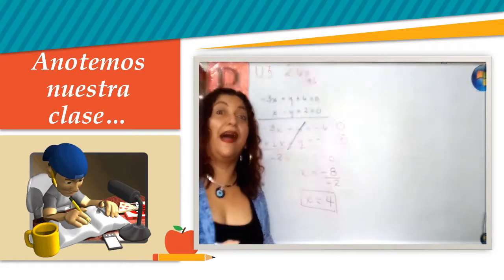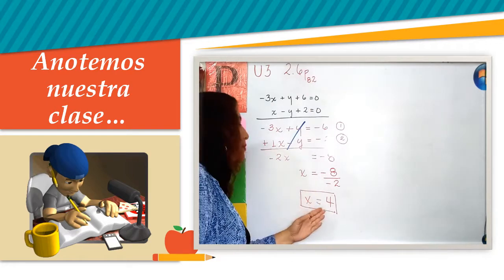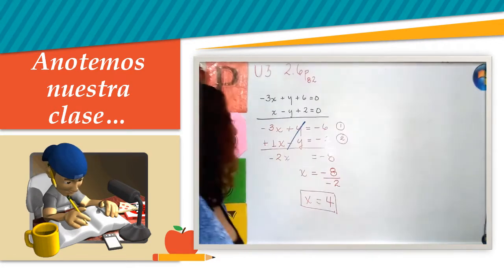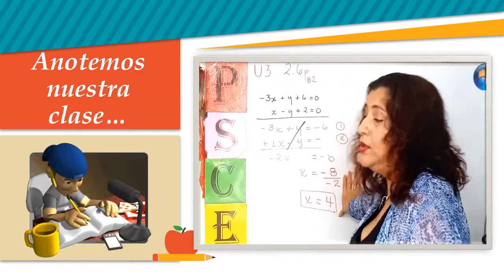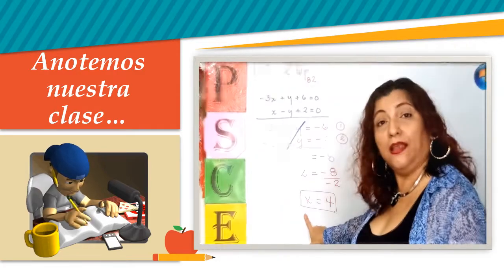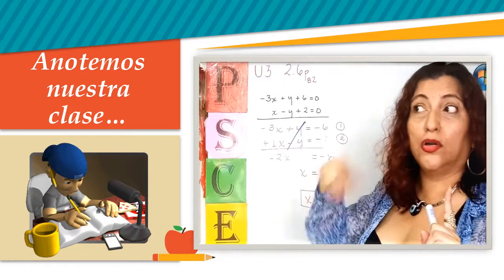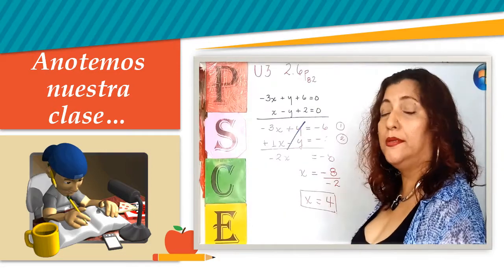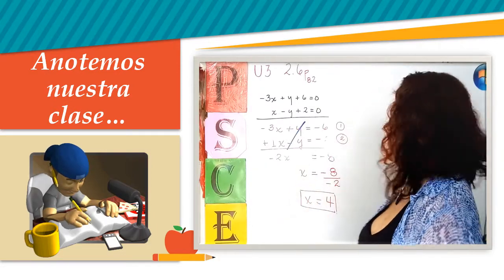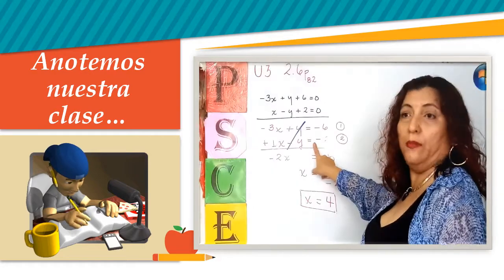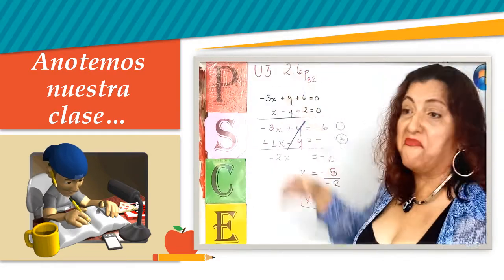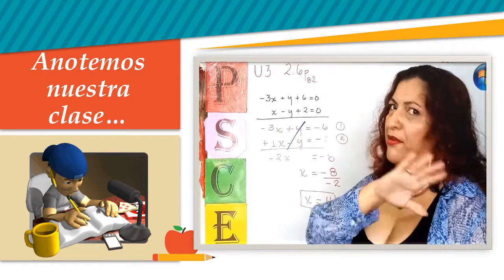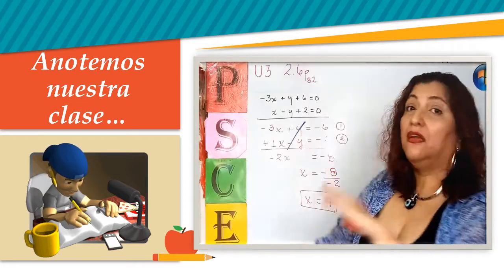¿Y qué es eso? Lo que estamos encontrando primero es el punto de intersección de las dos gráficas. Ahora que haya hecho esto, y sabiendo mi valor de x, voy a encontrar la coordenada en y. Voy a tomar cualquiera de las expresiones y voy a sustituir el valor de x. Voy a tomar la número 2. ¿Por qué? Porque es la más facilita, la que no tiene signos negativos. Pero perfectamente puede hacer usted la 1 y le va a dar lo mismo.